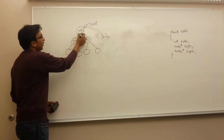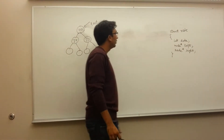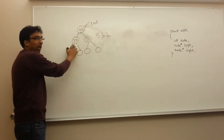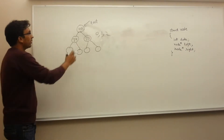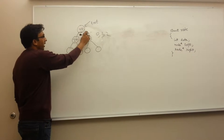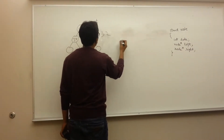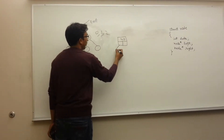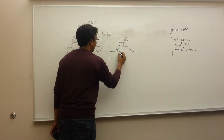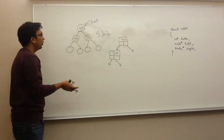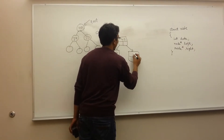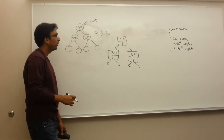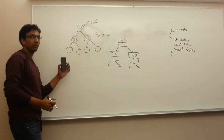So what will be the data structure for every node? It will be a structure in which we will have the data element, like we have 40 here. Then we will have a left pointer that will point to the left child, and we will have a right pointer that will point to the right child. So in this case, 40 is the data, its left child is 30, and its right child is 50. This will be our data structure, which can be represented in a more convenient form. So this is a binary tree.